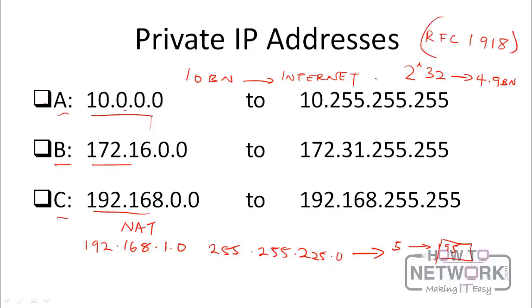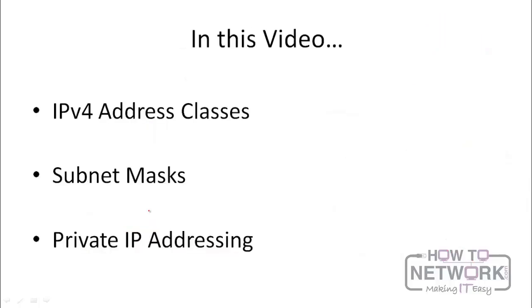If you've connected to a network, you've likely seen a 10.x, 172.x, or 192.168.x address — those are the defined private IP address ranges from RFC 1918. For class A, the private range is 10.0.0.0 to 10.255.255.255 — one class A network. For class B, it's 172.16.0.0 to 172.31.255.255 — 16 class B networks. For class C, it's 192.168.0.0 to 192.168.255.255 — 255 class C networks. You should memorize these for exams and Cisco configuration work. In this video we covered IPv4 classes, subnet masks, and private IP addressing.